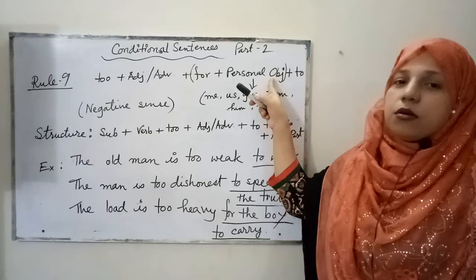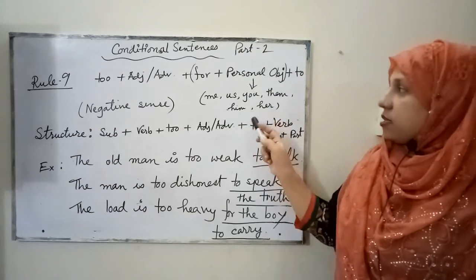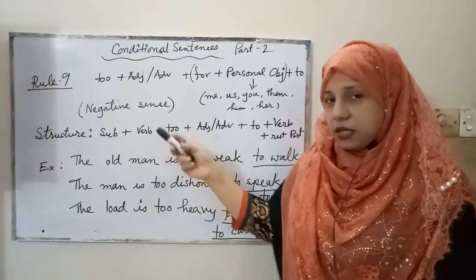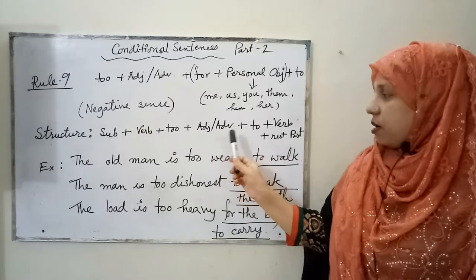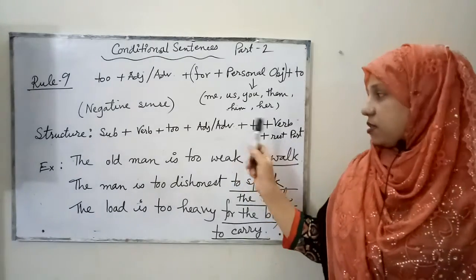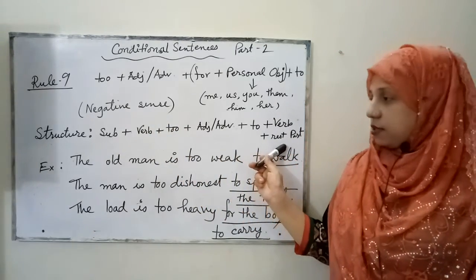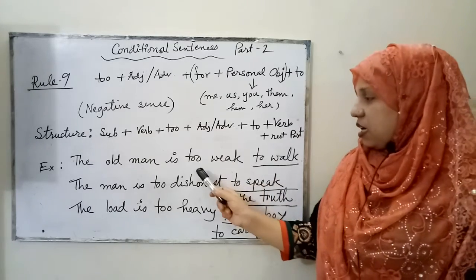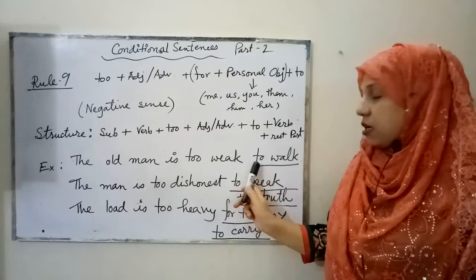Personal objects are: me, us, you, them, him, or her. This type of structure carries a negative sense. The structure is: subject + verb + too + adjective or adverb + to — and you complete it with: verb + rest of the sentence. You have to use a suitable verb which carries a negative meaning. For example: 'The old man is too weak to walk,' meaning he is so weak that he cannot walk — it carries a negative sense.